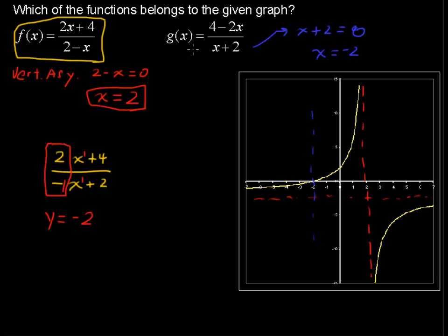If I did the same thing on g of x, I would get the same horizontal asymptote. Negative 2x plus 4 over x plus 2, I would get y equals negative 2. It would get the same horizontal asymptote,